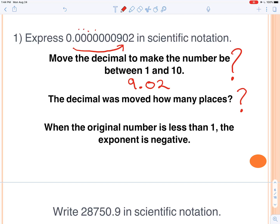One, two, three, four, five, six, seven, eight. So we moved eight places. When the number is less than one, if it's a small number, the exponent is going to be negative. So now we want to put that all together. Go ahead and write this number in scientific notation. 9.02 times 10 to the negative eighth.